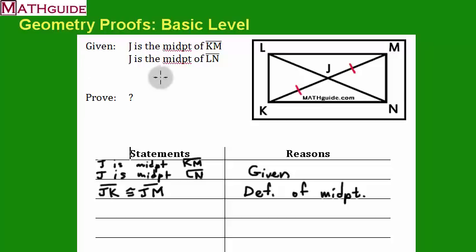Likewise, I'm going to use the next statement here. J is the midpoint of LN. Well, here's LN. Here's the midpoint. That's a midpoint right there. So it means that this segment has got to be congruent to this segment. I'm going to list that in my proof too. I'm going to say that JL is congruent to JN. And I'm not going to put the word ditto or anything like that. I'm actually going to write this out. I'm going to put definition of midpoint.